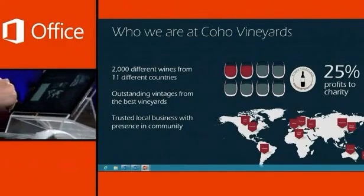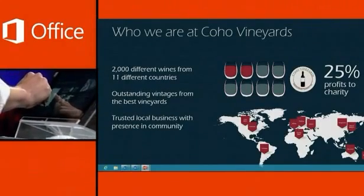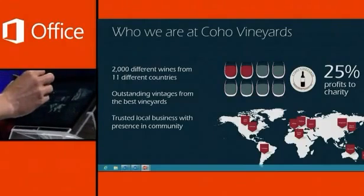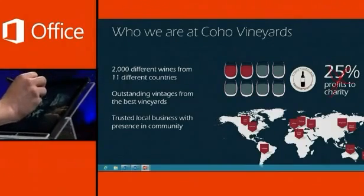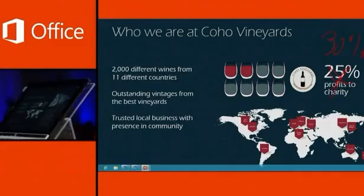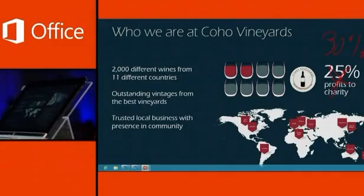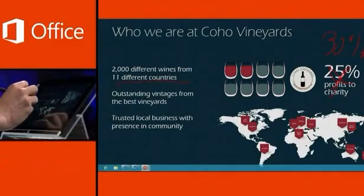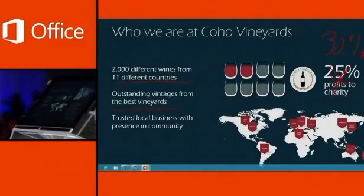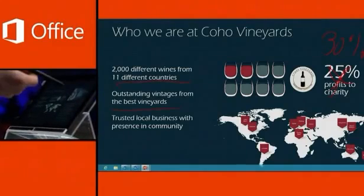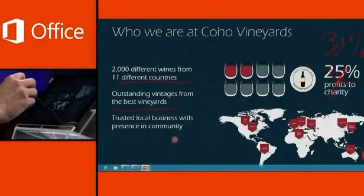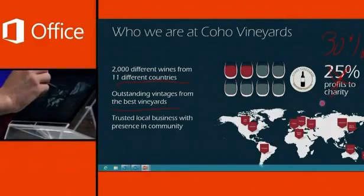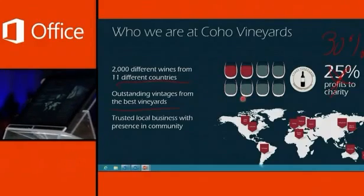I'll go ahead and turn on a pen here. Let's say instead of 25% profits going to charity, I want to cross that out — I want 30% going to charity. I can underline, I can highlight. Some people like to use a pen as a laser pointer when giving presentations, so we have a laser pointer option as well. You can see the laser pointer appear on the slide as I hover over it to highlight things during my presentation.